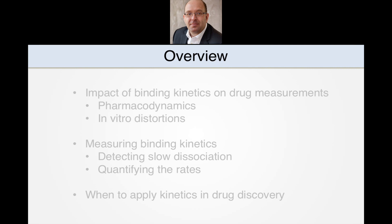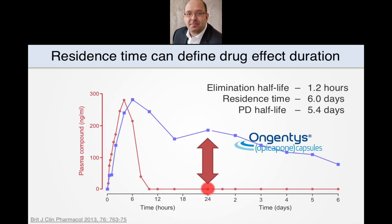Then we'll go through the methods we use to measure the kinetics of drug binding, including assays that detect whether compounds have a long residence time and assays to actually quantify the rates of binding. We'll finish with some thinking about when to apply kinetics in the drug discovery process. Let's start by looking at how kinetics can affect drug effect in man. In this example, we will see how residence time can define the duration of drug effect, compensating for rapid compound elimination from the body. This is exemplified by the drug apicopone, a new drug for treating Parkinson's disease.